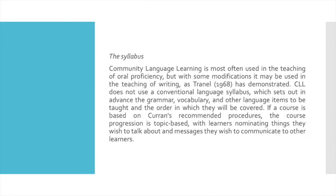Community language learning is most often used in the teaching of oral proficiency, but with some modifications it may be used in the teaching of writing, as Drainall has demonstrated. CLL does not use a conventional language syllabus, which sets out in advance the grammar, vocabulary, and other language items to be taught and the order in which they will be covered. If a course is based on Curran's recommended procedures, the course progression is topic-based, with learners nominating things they wish to talk about and messages they wish to communicate to other learners.